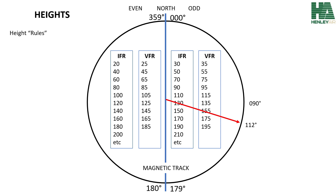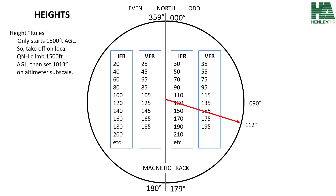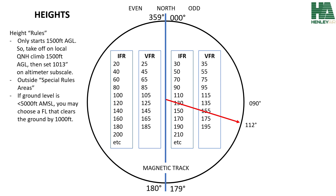There are a couple of height rules. The first is that the semi-circular rule only starts at 1,500 feet AGL. You will typically take off from Parais on a local QNH and climb until you get to 1,500 feet AGL, then set QNH 1013 on your altimeter subscale and you'll be flying flight levels. This will only apply outside of special rules areas and outside of controlled airspace. If the ground is less than 5,000 feet above mean sea level, you may choose a flight level that clears the ground by 1,000 feet. If the ground is more than 5,000 feet above mean sea level, you must clear it by 2,000 feet.